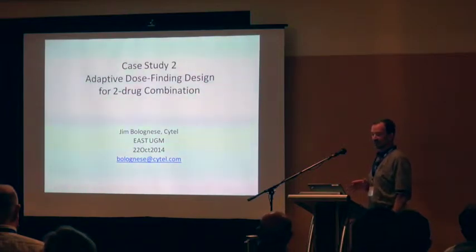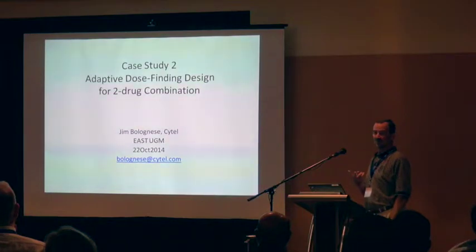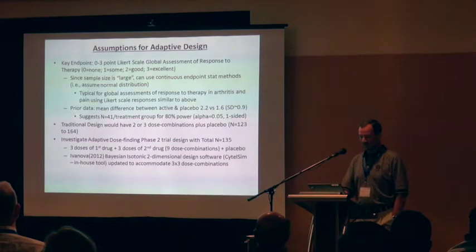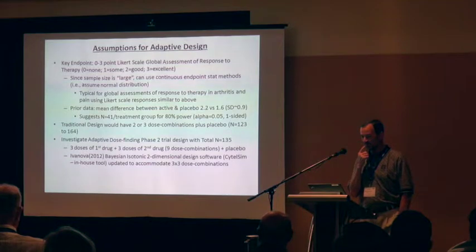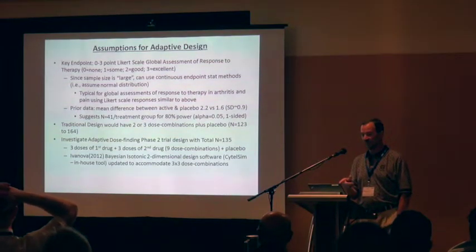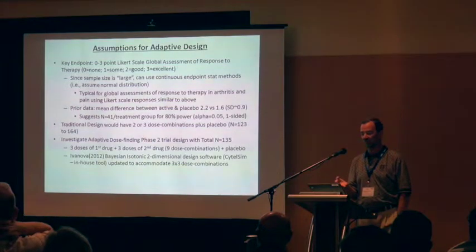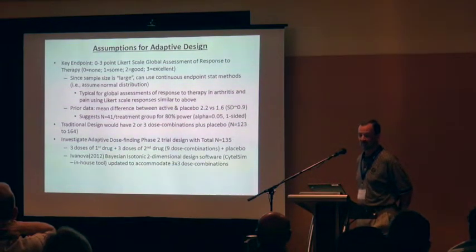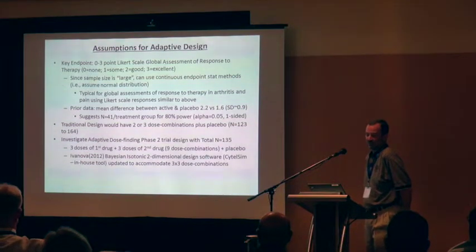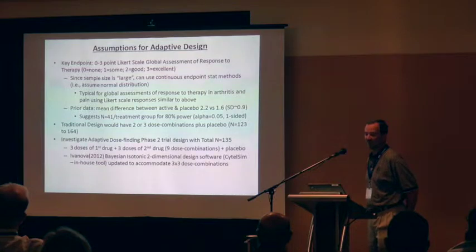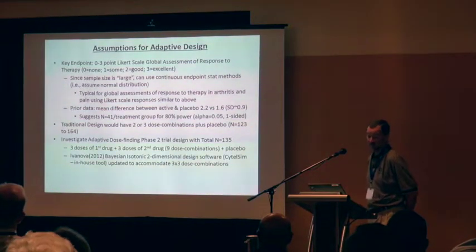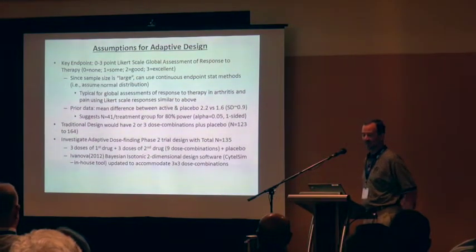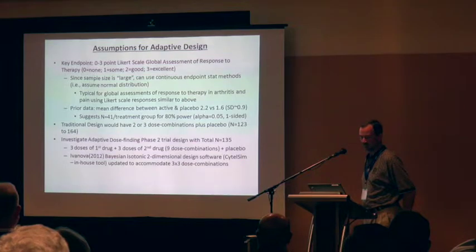The second case study is an adaptive dose-finding design for a two-drug combination. The primary endpoint was a zero to three Likert scale global assessment of response to therapy to measure efficacy — either none, some, good, or excellent. Since the sample size is large, we proposed to use continuous endpoint statistical methods, as has been done in pain studies.